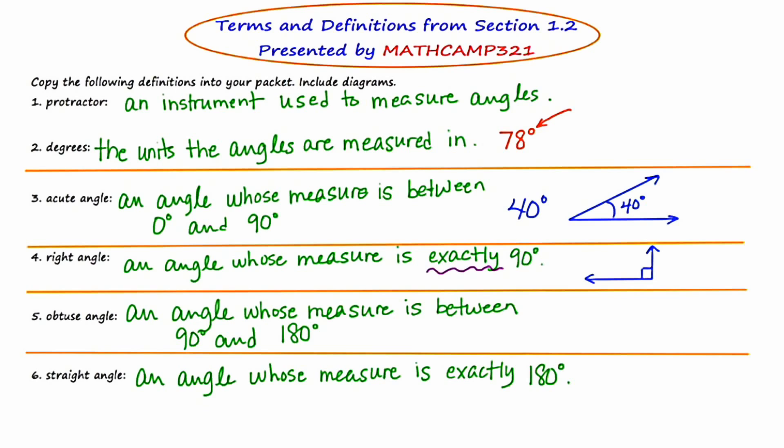The next type of angle I'm going to illustrate is the obtuse angle. Remember, an angle is obtuse if its measure is between 90 and 180. I'm going to arbitrarily pick a measure between 90 and 180 — I'll pick 110 degrees — and illustrate that by drawing an example of an angle that's about 110 degrees.